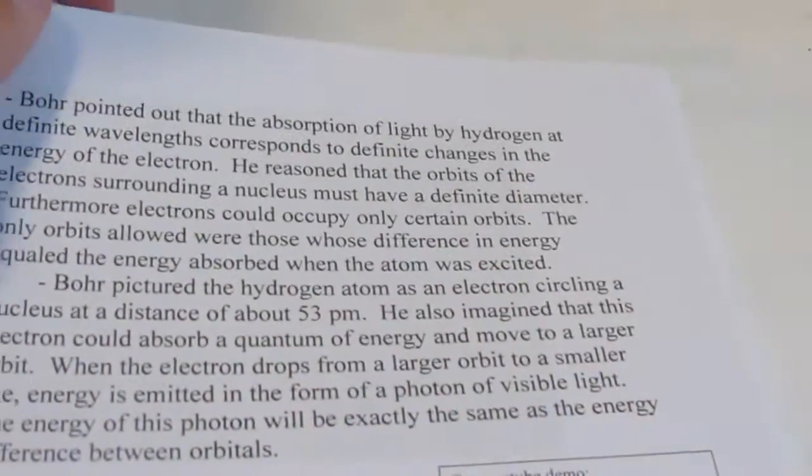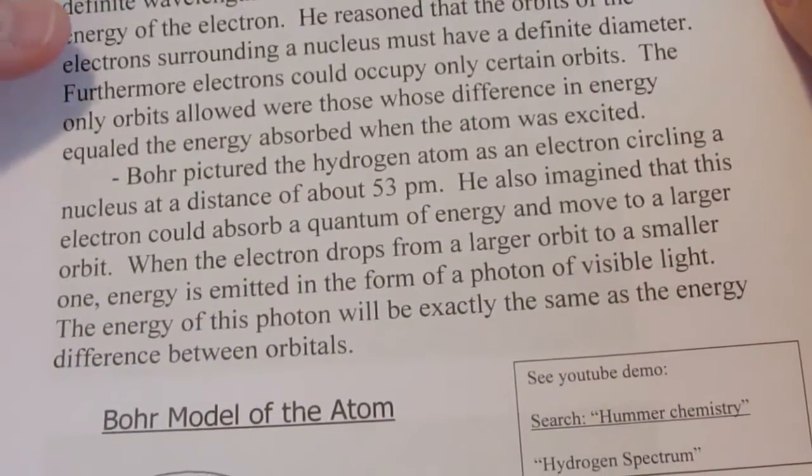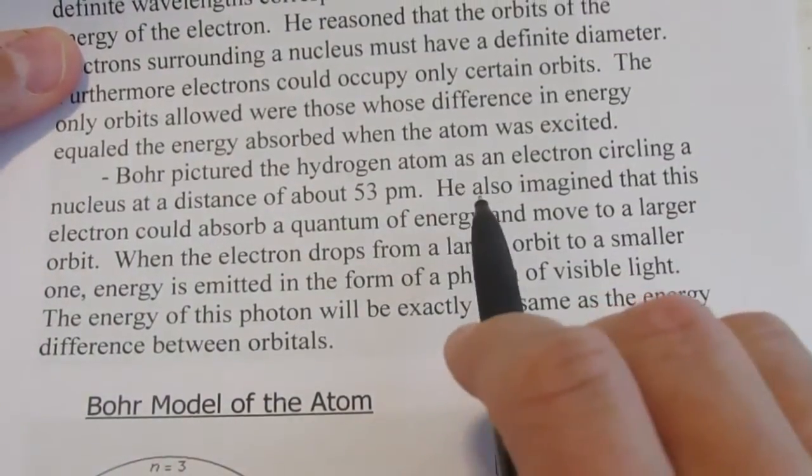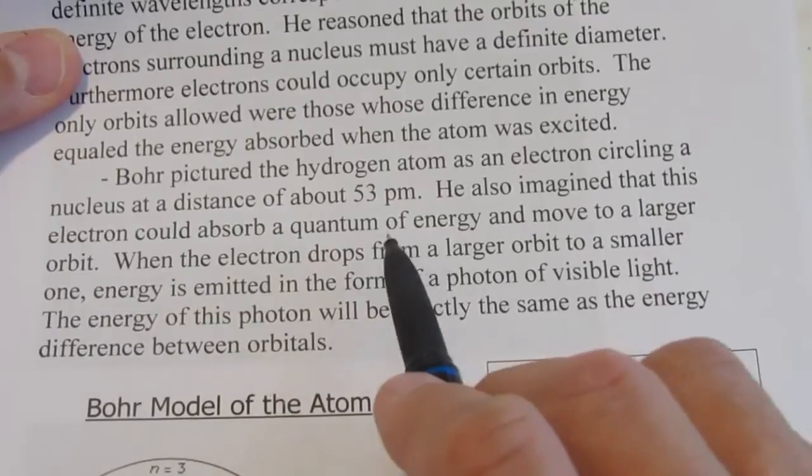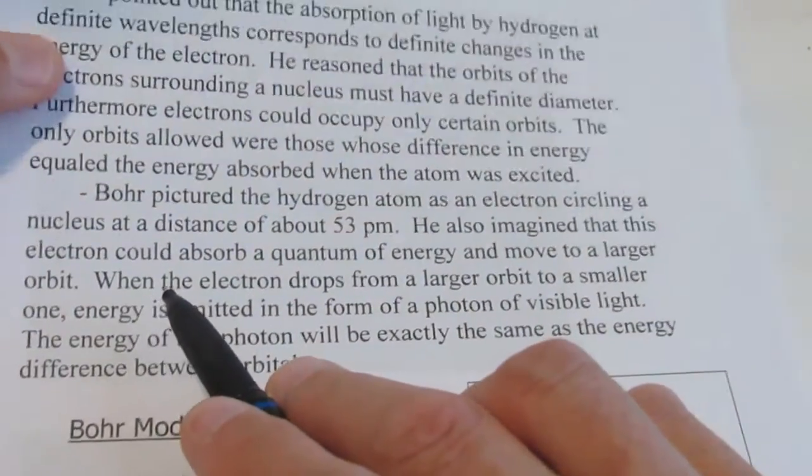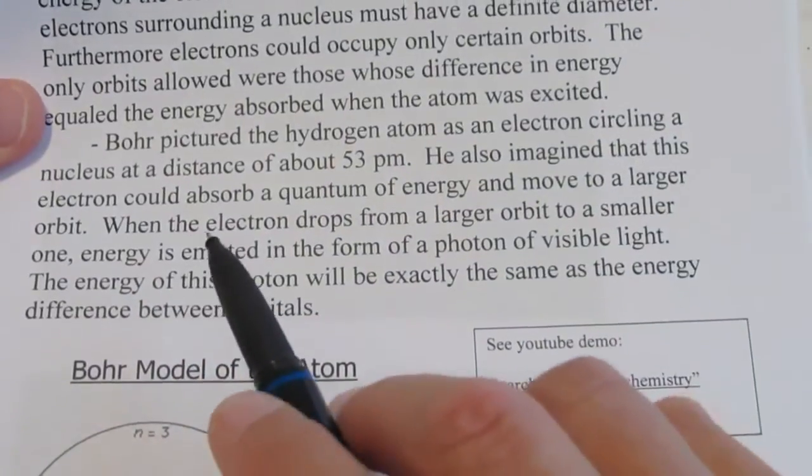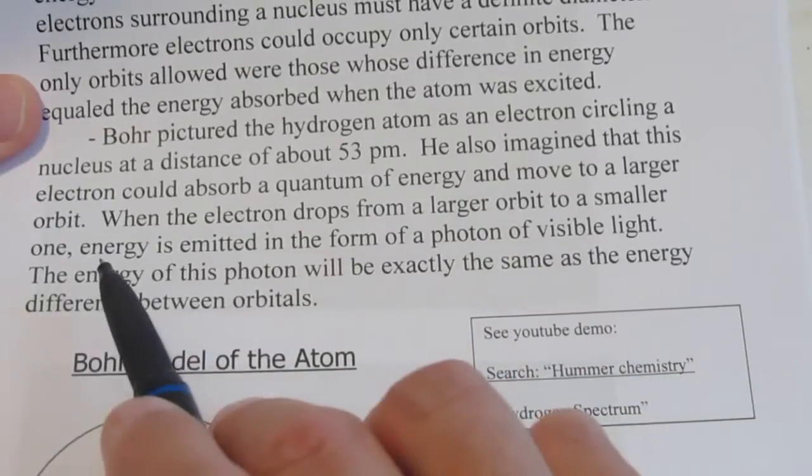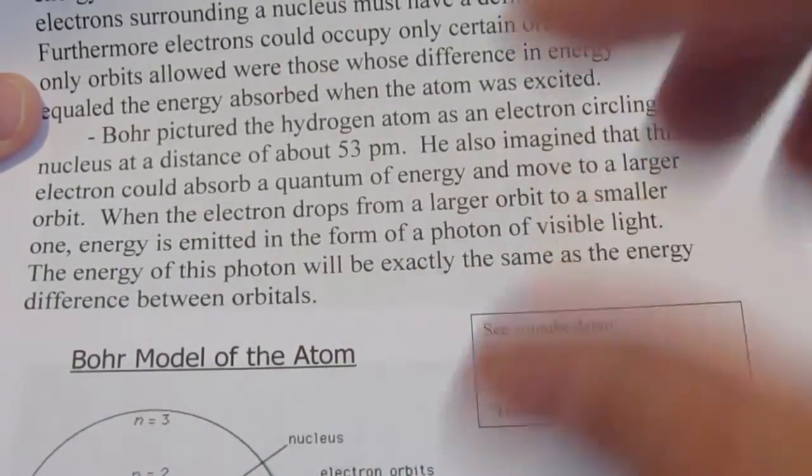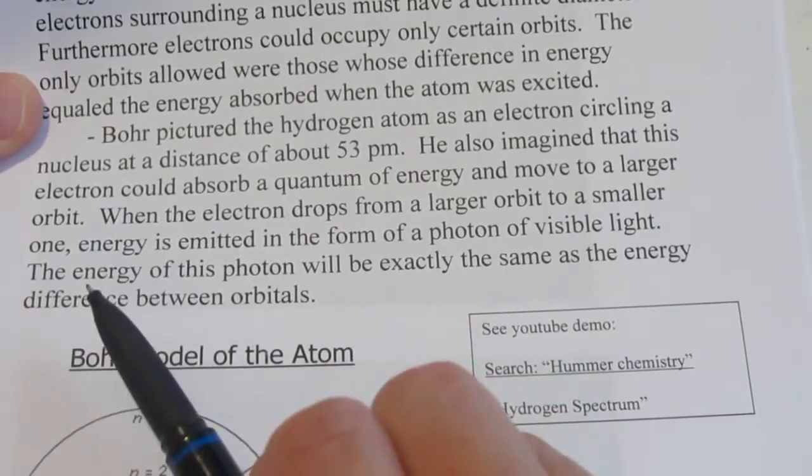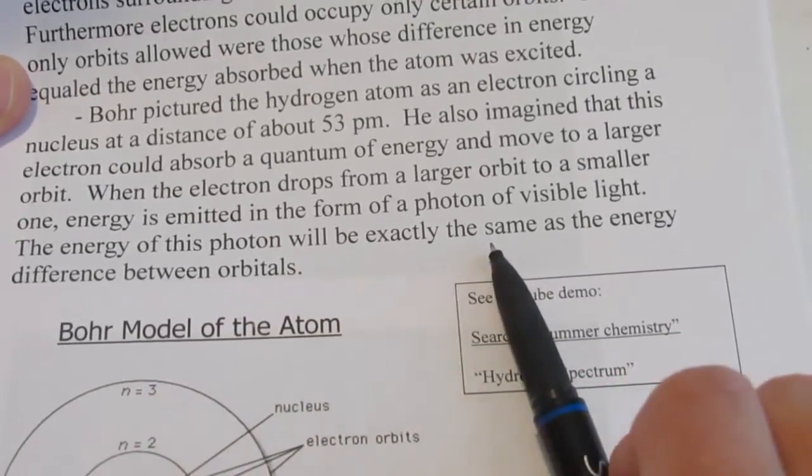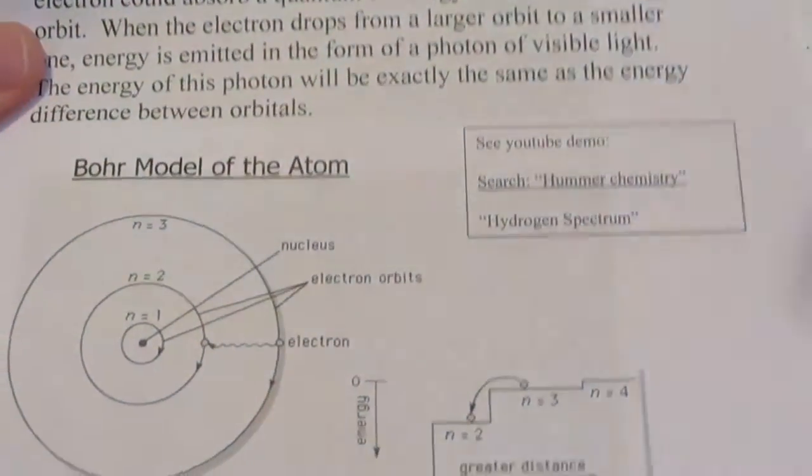Now back to Bohr. Bohr pictured the hydrogen atom as an electron circling a nucleus at a distance of about 53 picometers. He also imagined that this electron could absorb a quantum of energy and move to a larger orbit. Now it wasn't stable there. When it moved to that larger orbit, the electron would drop from that larger orbit to a smaller one. Now remember, if it took energy to go up, energy is given off as it drops down. And it gives that energy off as a photon of visible light. The energy of this photon will be exactly the same as the energy difference between the orbitals.